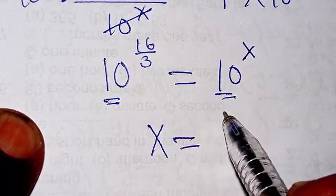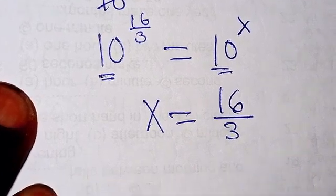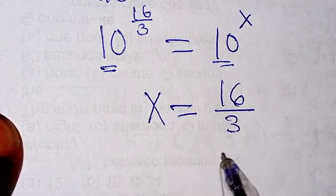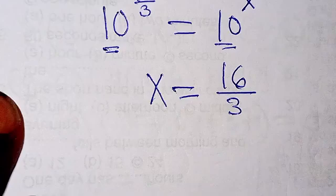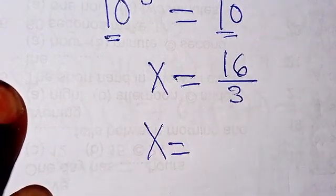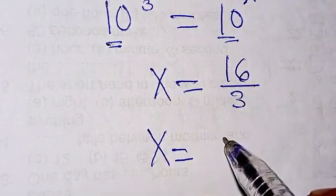We are going to have x equals 16 over 3. So we can leave our answer like that, or you can convert this to mixed number because this is improper. Converting to mixed number, 3 into 16 is going to be 5 whole number 1 over 3, and that is the solution.